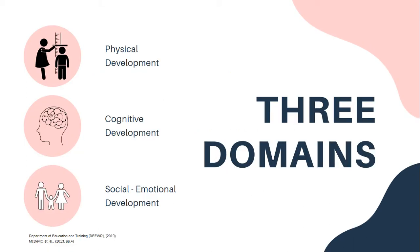The study of childhood development can be categorized into three different domains. Physical development addresses the biological changes to a child's body. Cognitive refers to the changes in a child's ability to reason and to develop their language. And social-emotional studies the changes in their emotions, relationships and moral reasoning. The most important thing that educators must keep in mind is that whilst all these domains can be studied separately, they are all highly interrelated. One domain will influence the development of another.